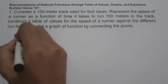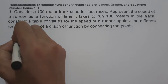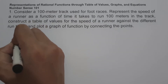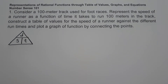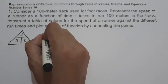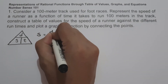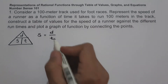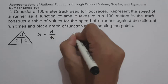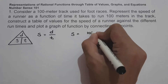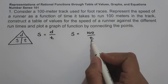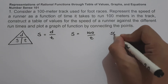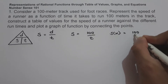If we illustrate this, let us draw a triangle. On the top we have the distance, on the left we have the speed, and on the right we have time. Since we are looking for the speed of a runner as a function of time, we have speed equals distance over time. Since our distance is 100, we get s = 100 over time. And since we are asked to represent time as x, we get s(x) = 100 over x. This will be our function.